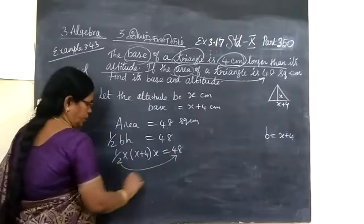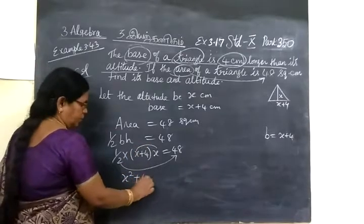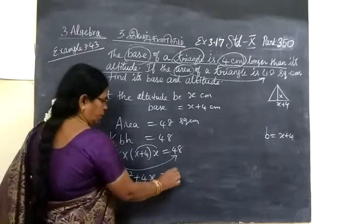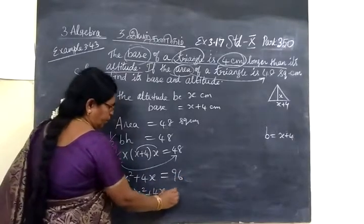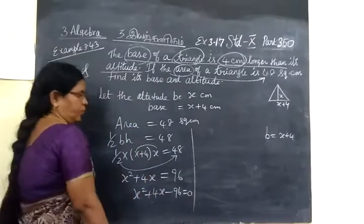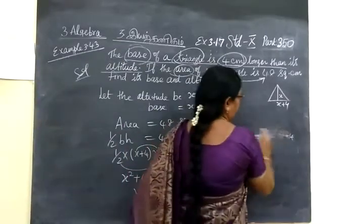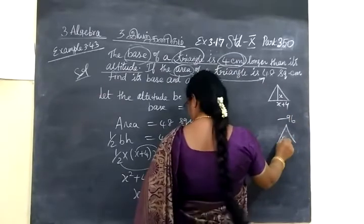Take half to that side. So x into x plus 4 is equal to 96. Bring 96 to this side. So x square plus 4x minus 96 equal to 0. So multiplication of minus 96 is, I mean, here what?